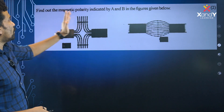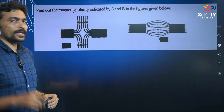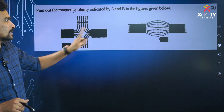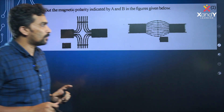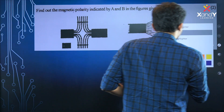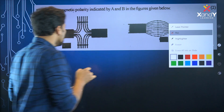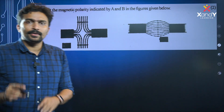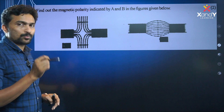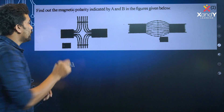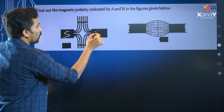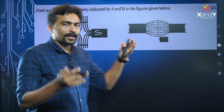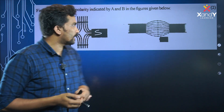Find out the magnetic polarity indicated by A and B in the given figures. Let's guess the magnetic polarity. In the first figure, we have to look at repulsion — that means like poles. One is the south pole and the other is the north pole.